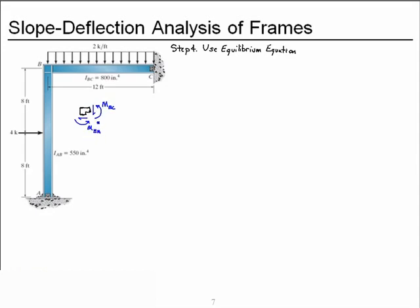We have moment BC and moment BA. These are drawn counterclockwise because in slope deflection we always draw moments clockwise on the ends of the beam or frame member. Newton's third law says that on this node between the members the moments must be equal and opposite, so we draw them counterclockwise. By applying moment equilibrium, summing moments about point B and choosing counterclockwise as positive, we have M_BA + M_BC = 0. This is our fourth equation.